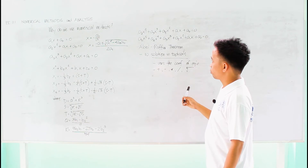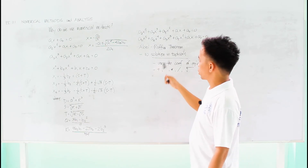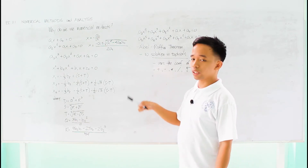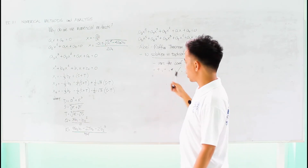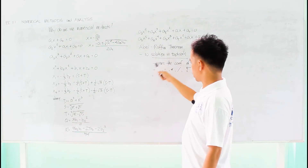So according to the Abel-Ruffini theorem, for equations of degree five or higher, there is no solution in radicals.